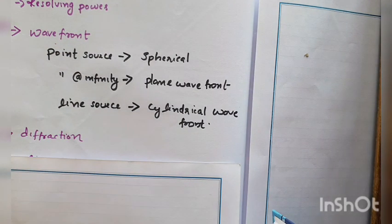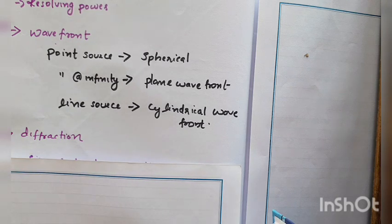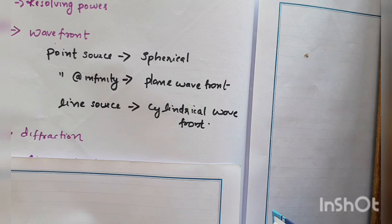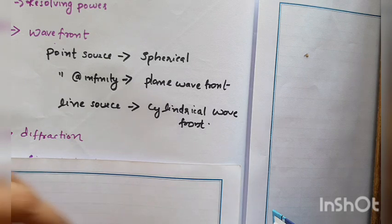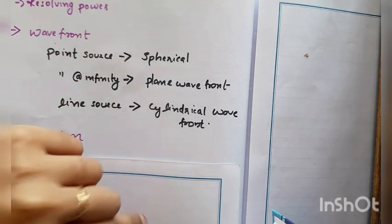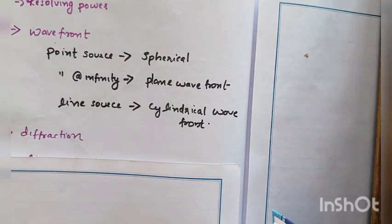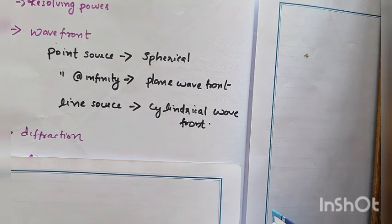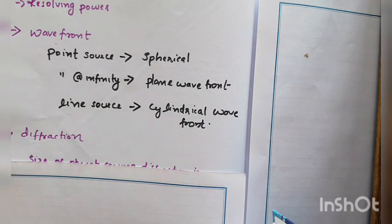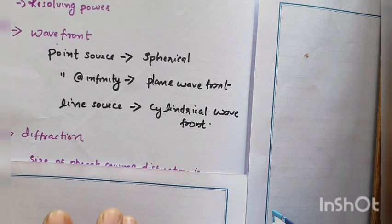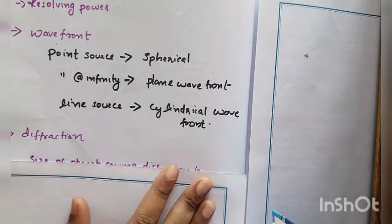What is diffraction? Diffraction is a phenomenon of uneven distribution of light intensity caused by the superposition of light coming from various points of a restricted wavefront. That is what a restricted wavefront is.